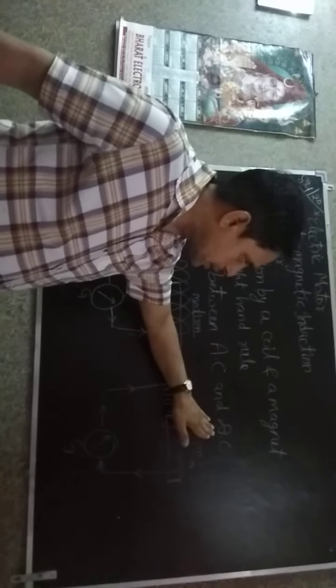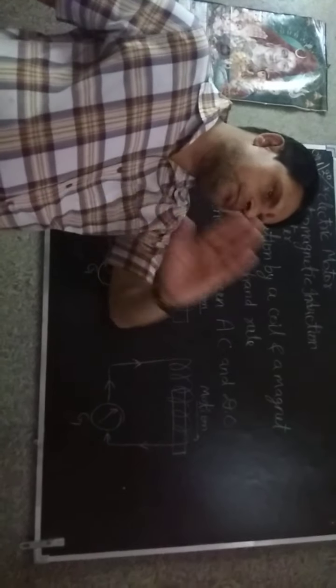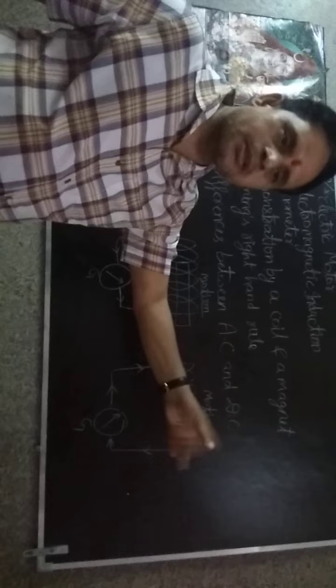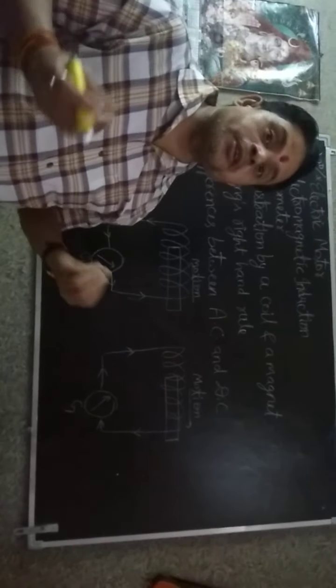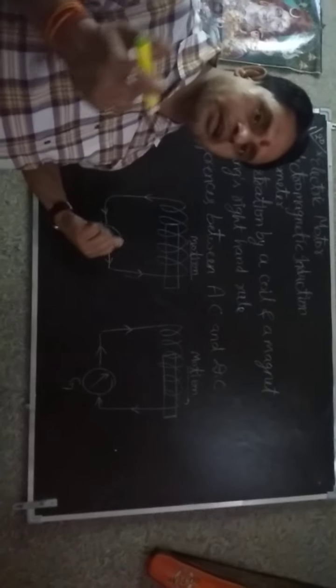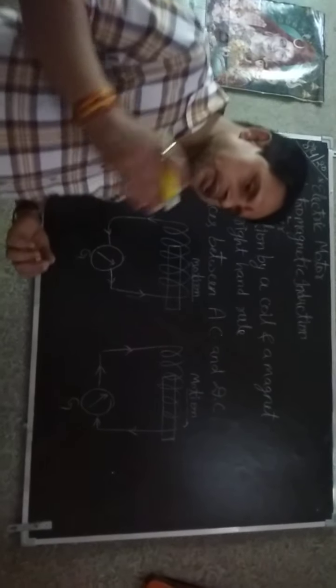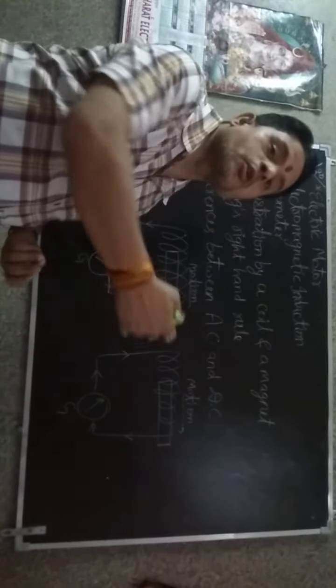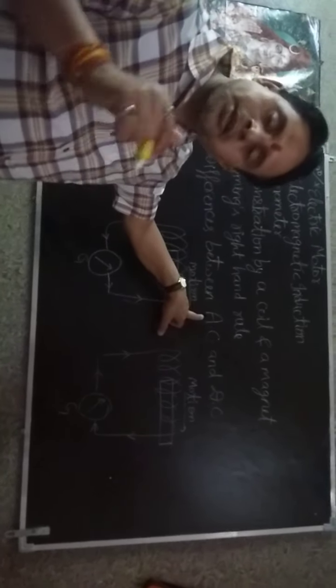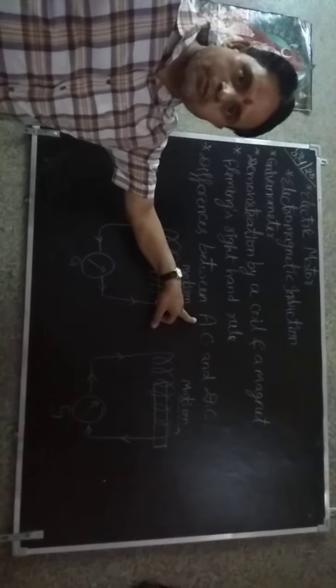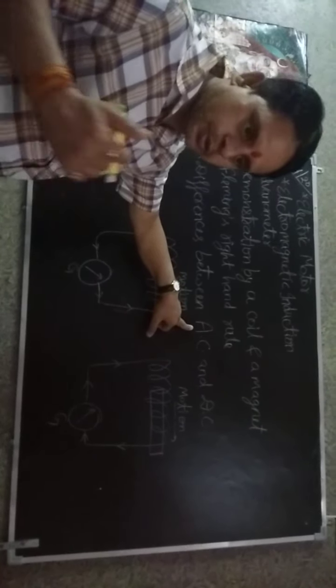Second point is that direct current cannot be transported for long distances - it loses a lot of energy, it has great loss of energy. Whereas alternating current can be easily transported to long distances without much loss of energy.